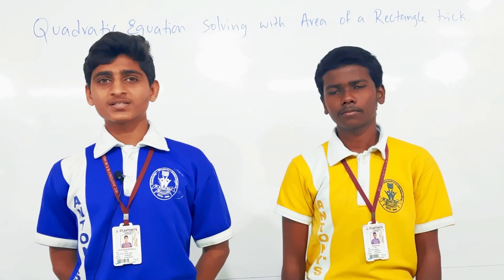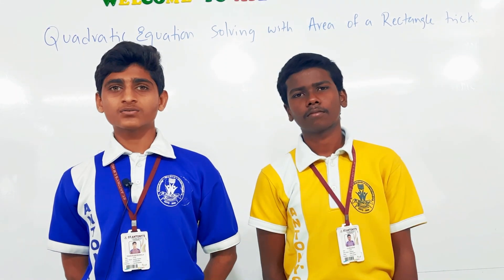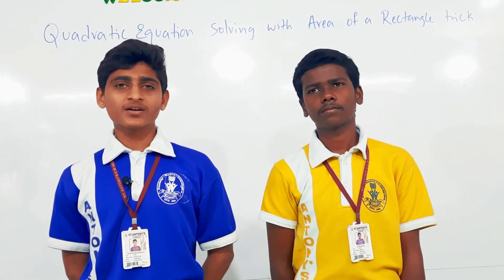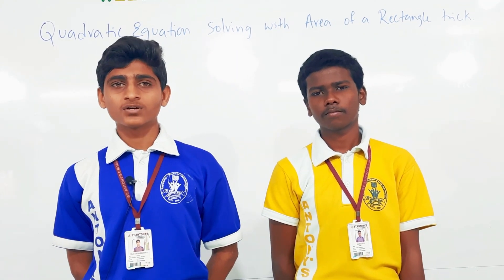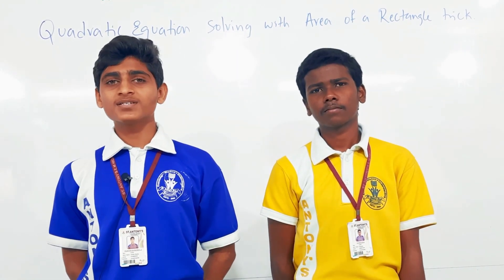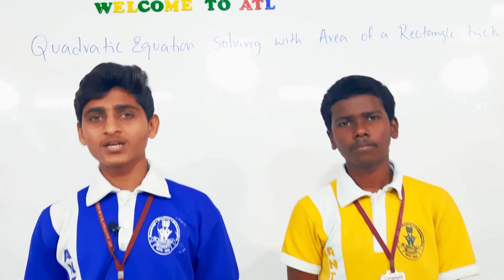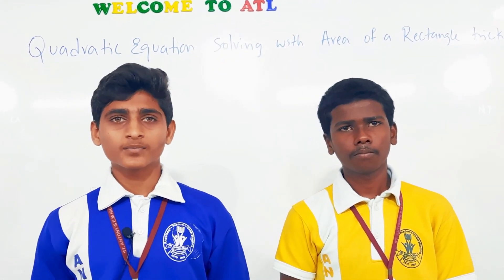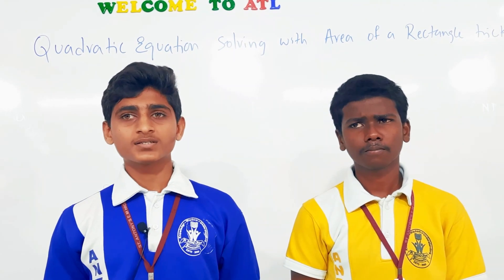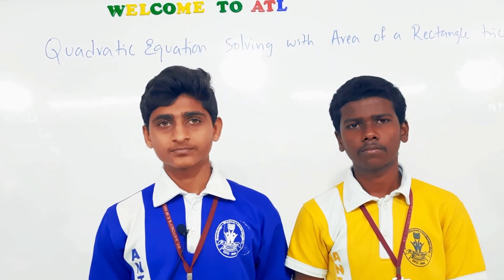A quadratic equation is a second-order polynomial equation. It contains two factors and two roots. The standard form of the quadratic equation is Ax² + Bx + C = 0, where A, B, C are real numbers and A is not equal to 0. If A equals 0, it is not a quadratic polynomial — it is a linear polynomial or equation.